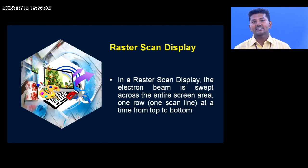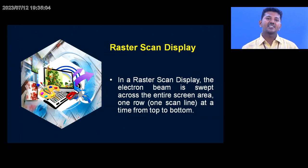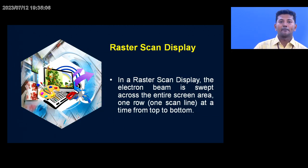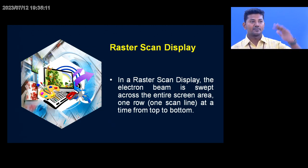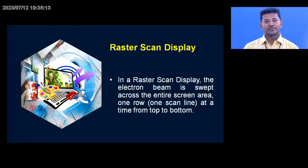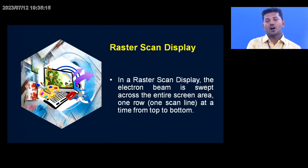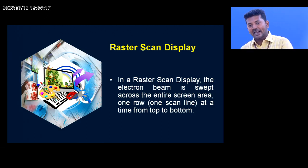What do you mean by raster scan display? The raster scan display is the electron beam that passes through the entire screen area in a row from top to bottom — that means from left top to the right bottom.